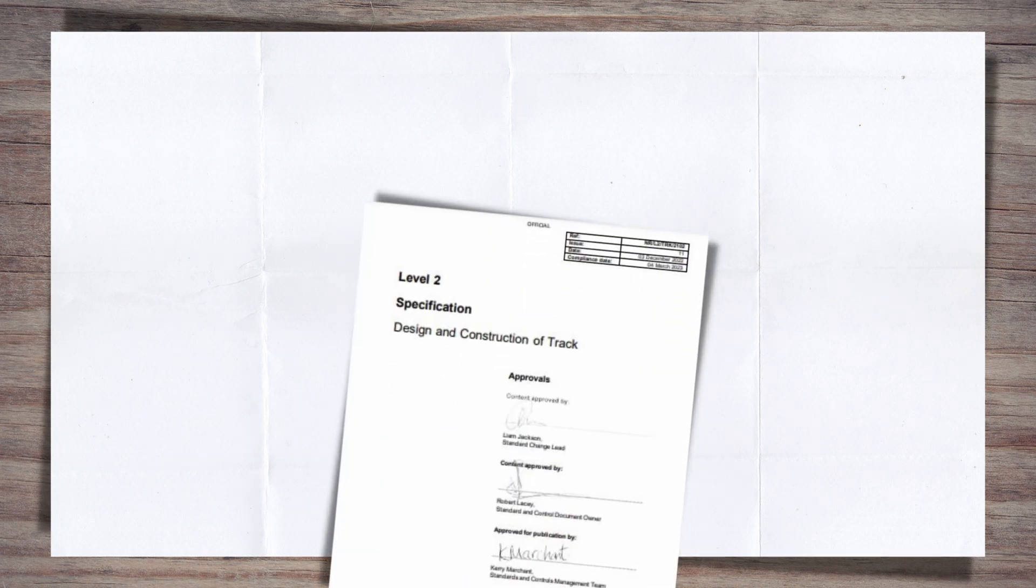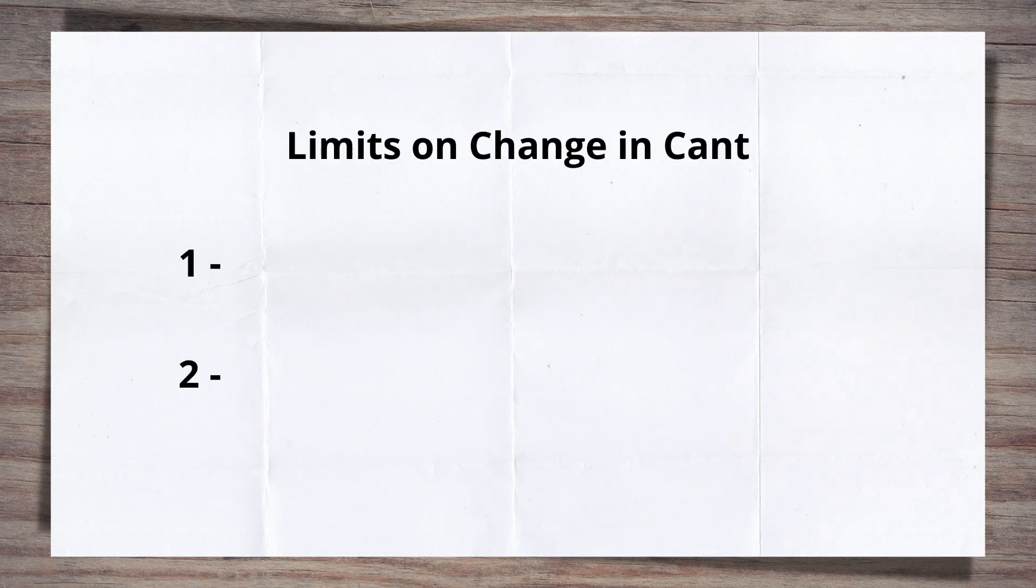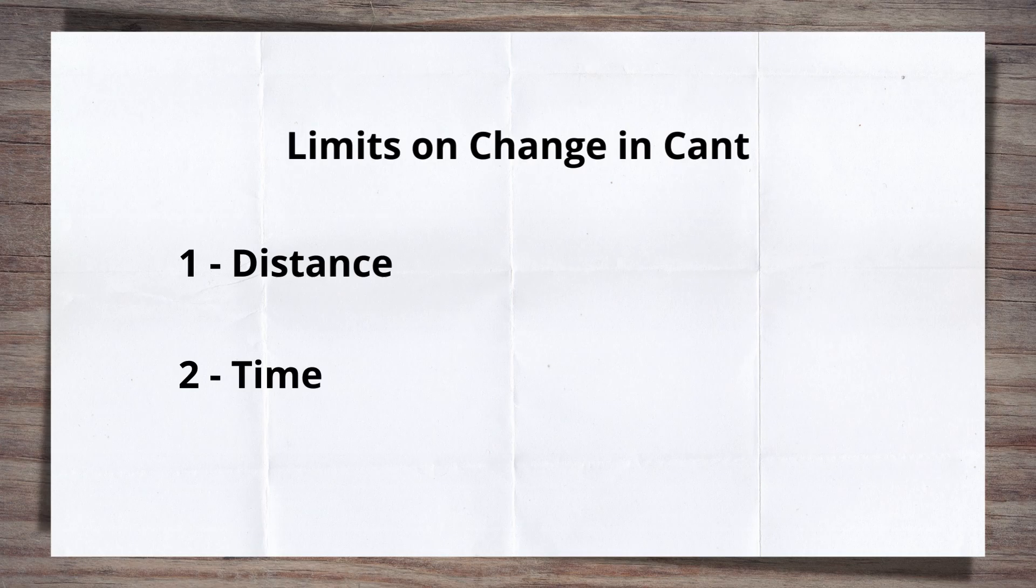The increase or decrease in cant is limited by the values stated in the standard. There are two ways the change in cant can be defined and then limited. First is by distance, and second is by time.